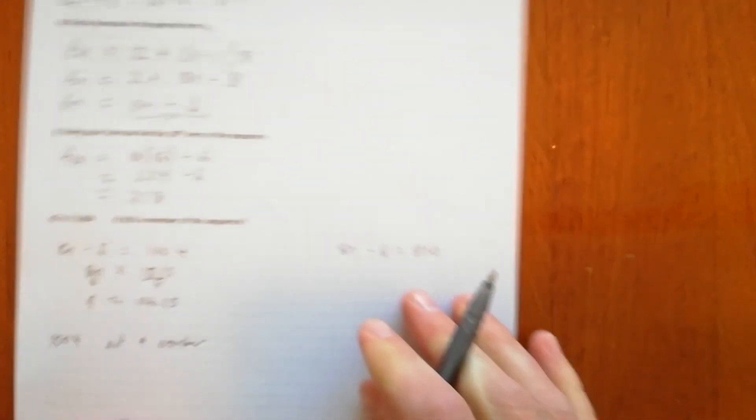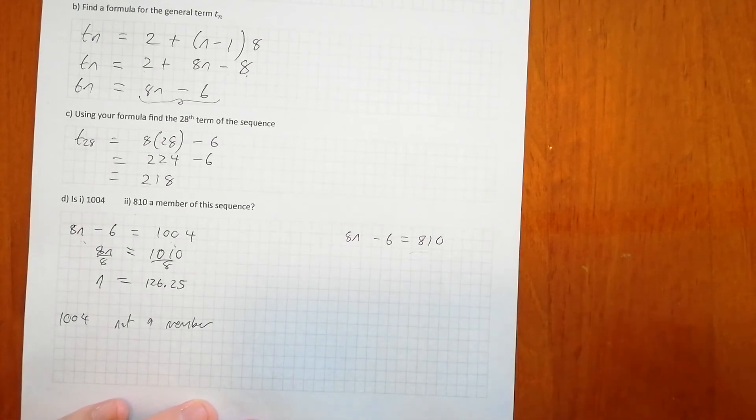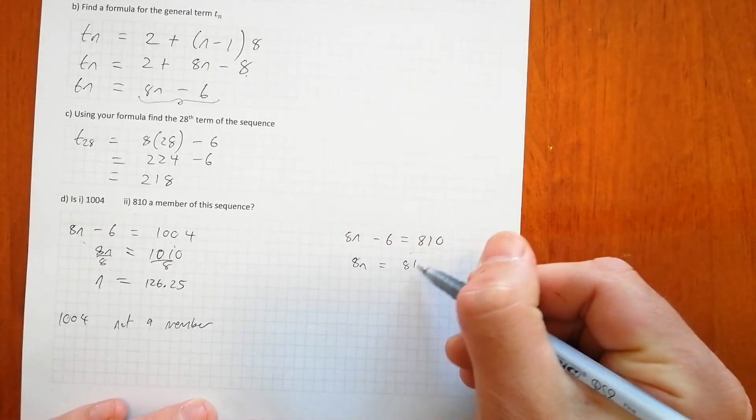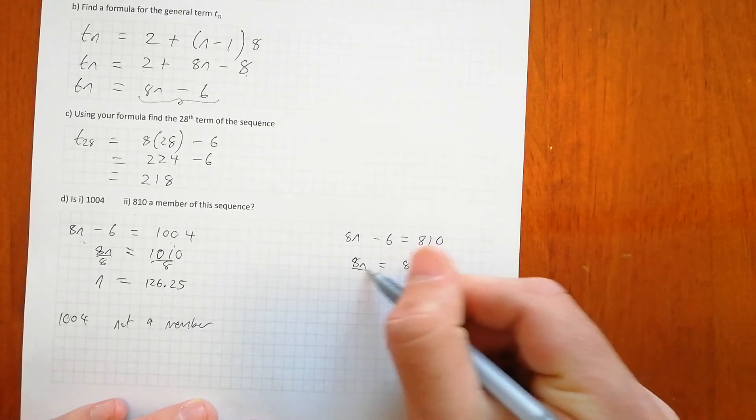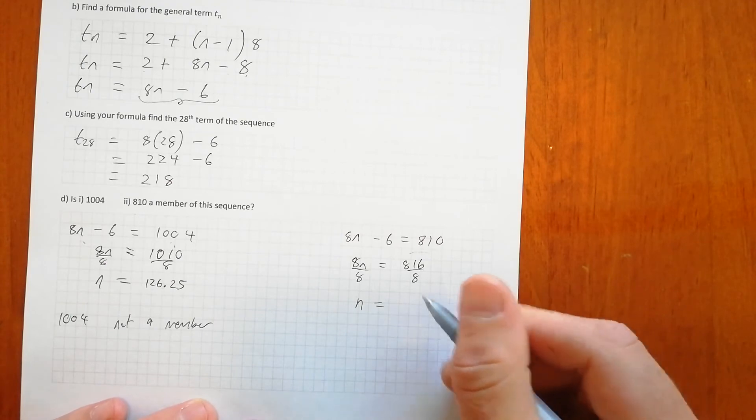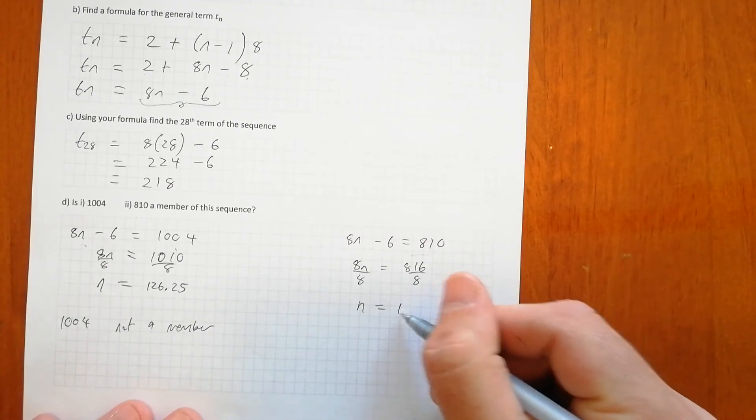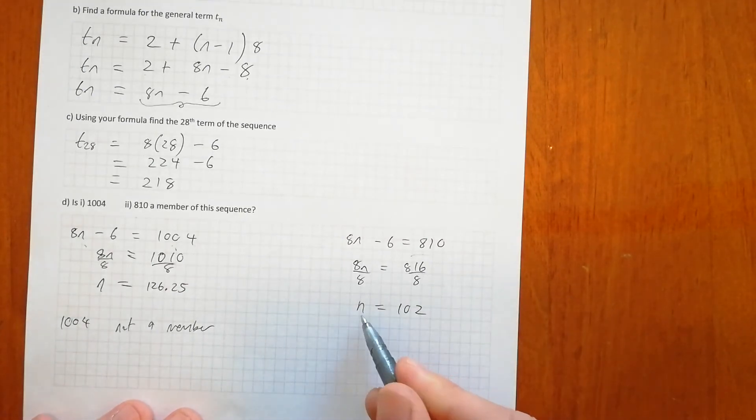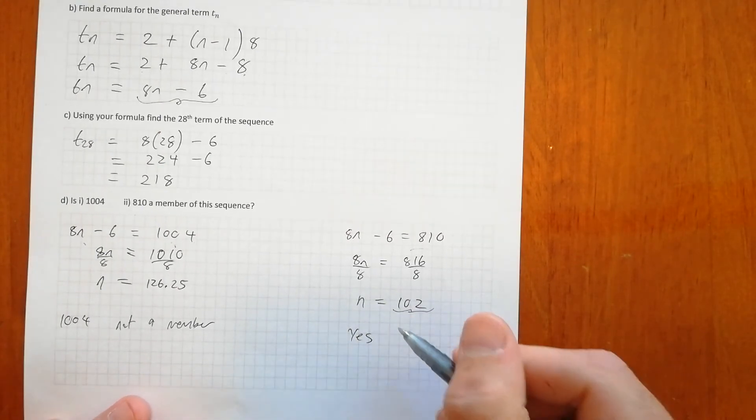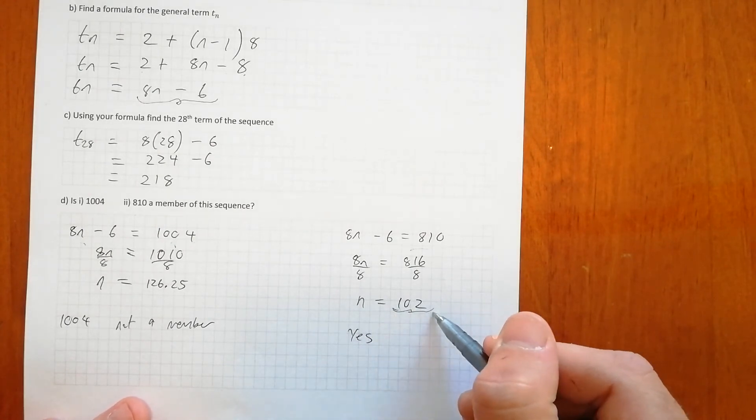Let's check 810. We're going to add 6 to both sides, so we're going to get 8n is 816. And divide both sides by 8 to get n by itself, and we'll have 102. And so in this circumstance, because n is a whole number, yes, this is a member.